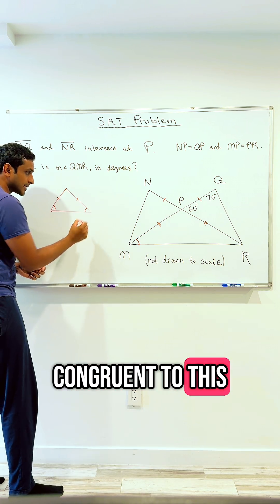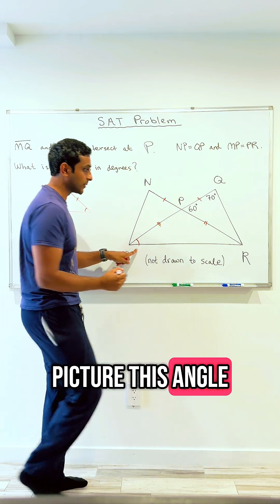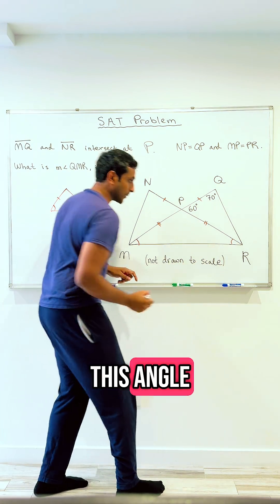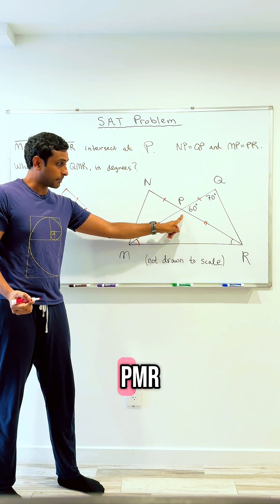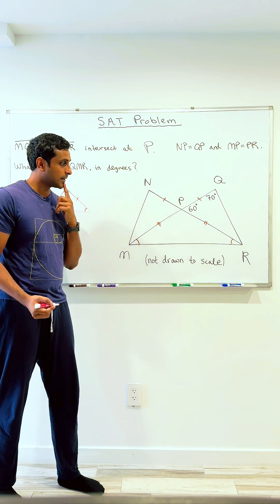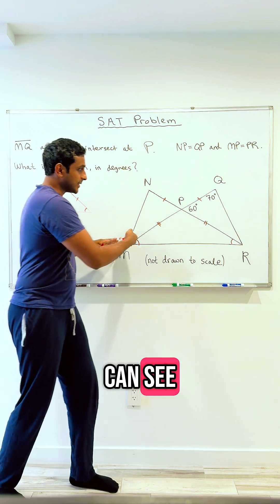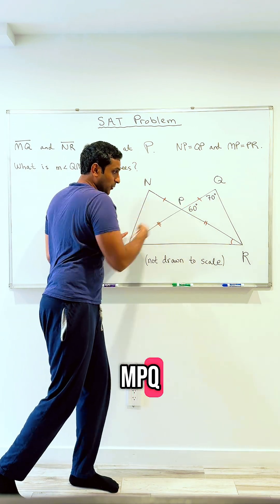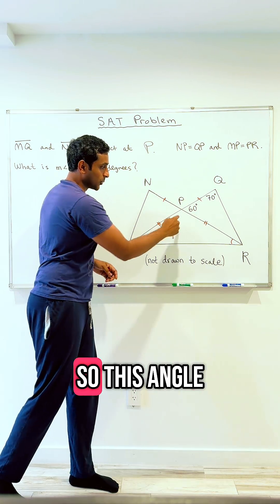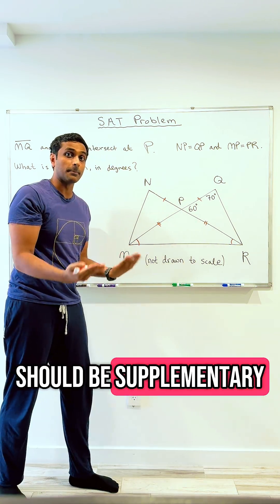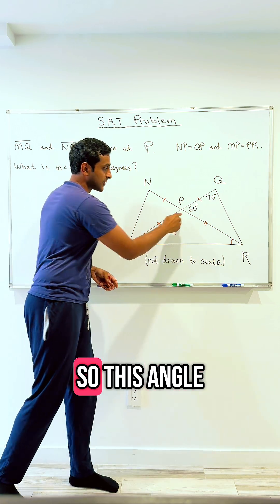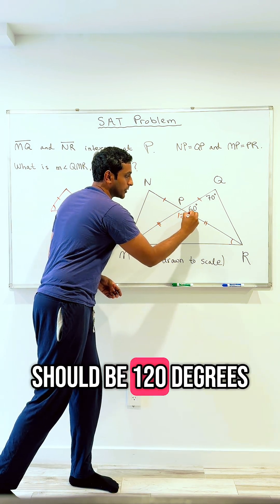So this is congruent to this, or in our picture, this angle is congruent to this angle. So the remaining angle here in triangle PMR, what is that? Well, as you can see, MPQ is just a straight line, right? So this angle and this angle should be supplementary, they should add up to 180 degrees, so this angle should be 120 degrees.